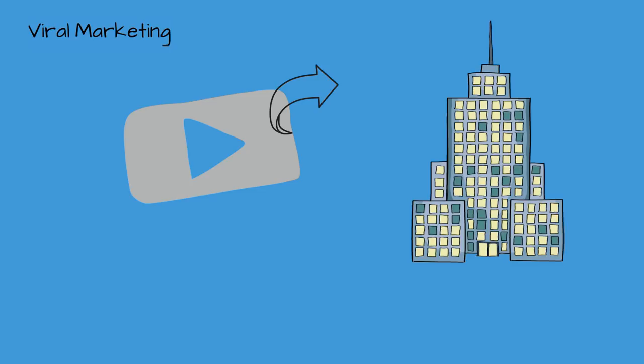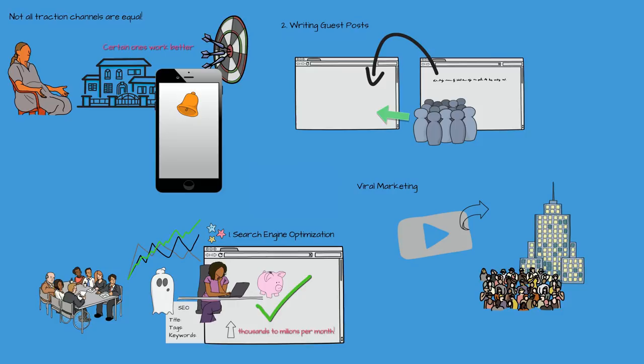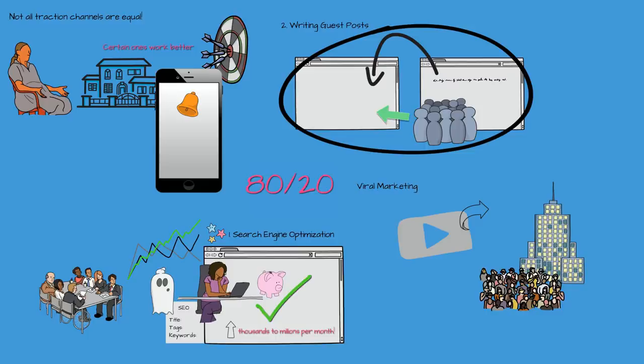Once you've identified the channel that brings the most growth, focus on that. Remember the 80-20 rule? One last thing to mention is that your decision to choose a traction channel not only depends on what type of audience you're trying to reach, but it also depends on what stage your business is at.